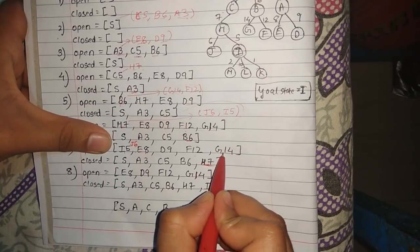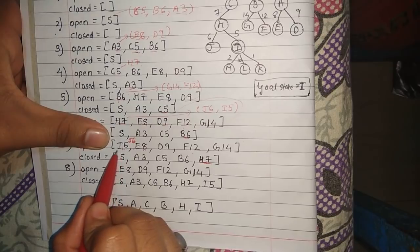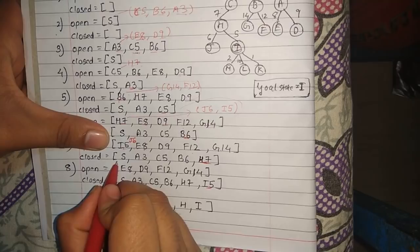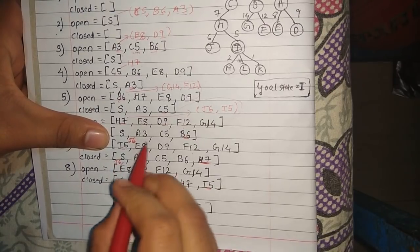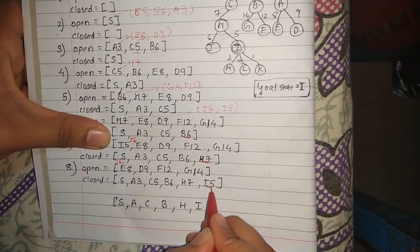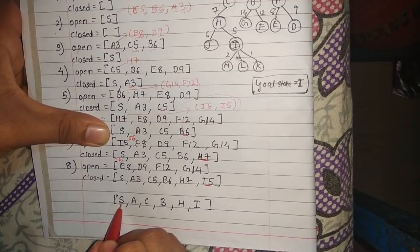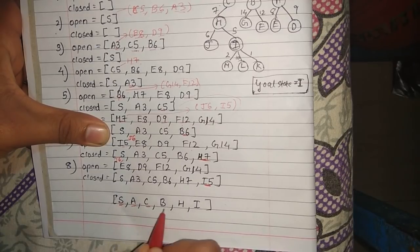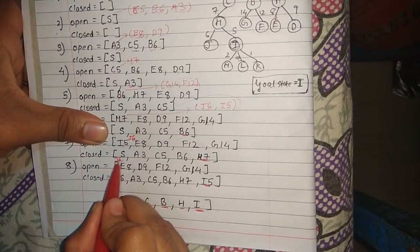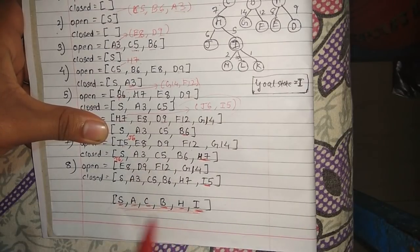The next value is i5, and i is the goal state we want. We place i into the closed array. So we have found our goal state. The final path obtained is: s → a → c → b → h → i.